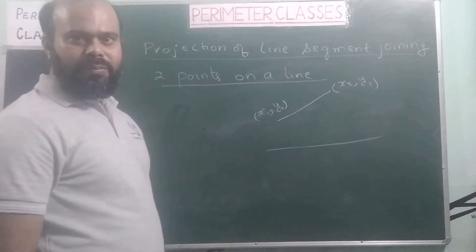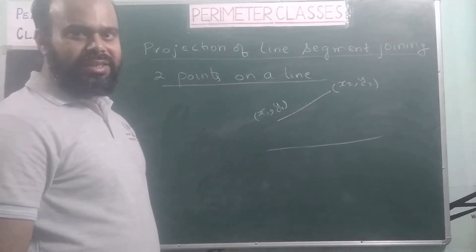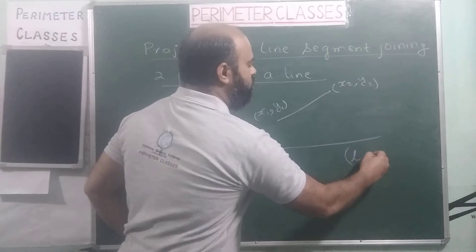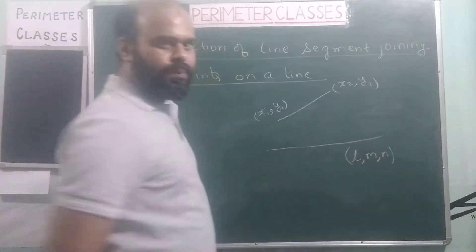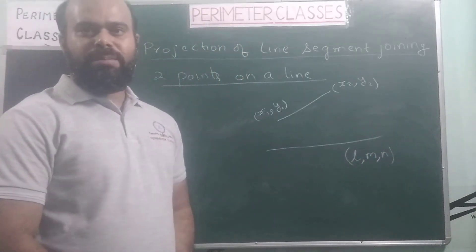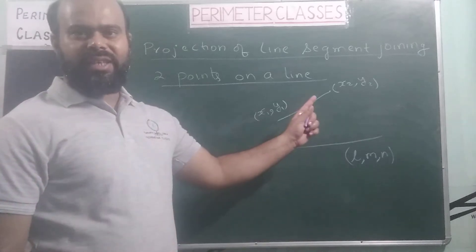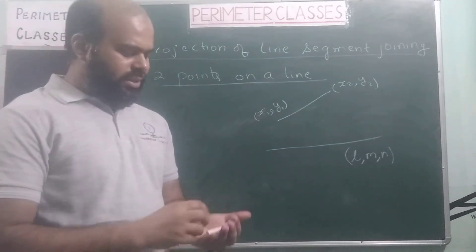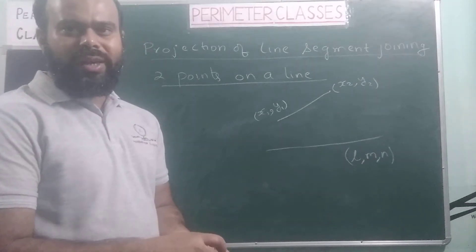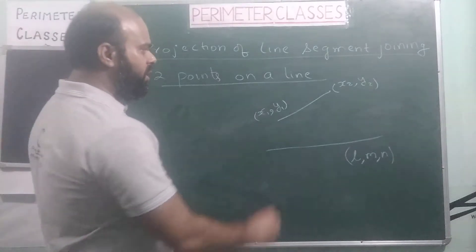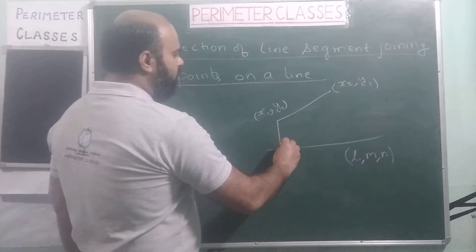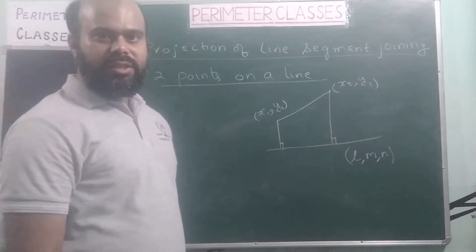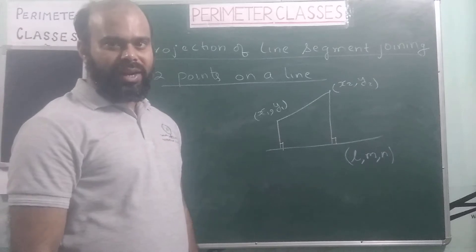There is a given line and its direction cosines L, M, N are available to us. What is the projection of this line segment on this given line? Projection means that from both the endpoints of the line segment, we will drop perpendiculars on this given line. This is what is called projection in normal life also.